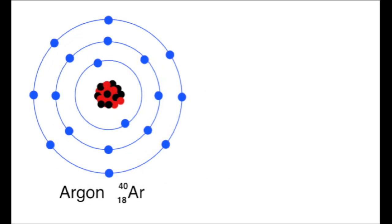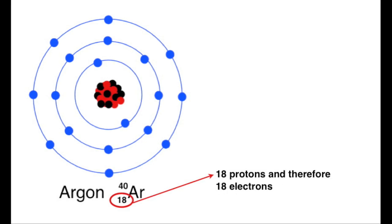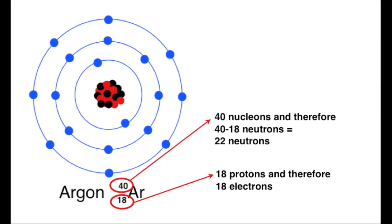The final example is argon. It has 18 protons in its nucleus and therefore again 18 electrons. The nucleon number is 40. We know that there are 18 protons and therefore there must be 40 minus 18, that is 22 neutrons. Larger atoms have always got more neutrons than protons.